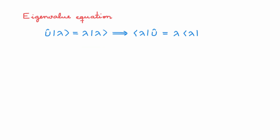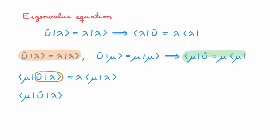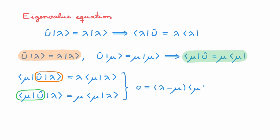We consider two eigenstates of U: the first, |λ⟩, obeying its eigenvalue equation, and the second, |μ⟩, obeying another eigenvalue equation. For the second one, we'll also make use of the corresponding equation for bras we've just derived. We calculate the bracket ⟨μ|U|λ⟩. Using the eigenvalue equation on the ket gives λ⟨μ|λ⟩. We can write the bracket again and now use the bra equation, which gives μ⟨μ|λ⟩. Subtracting these two equations gives that zero equals (λ - μ) times ⟨μ|λ⟩. This means that if λ is not equal to μ, then this bracket must be zero. The eigenstates of a unitary operator corresponding to distinct eigenvalues are orthogonal.